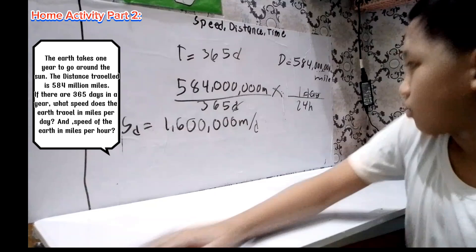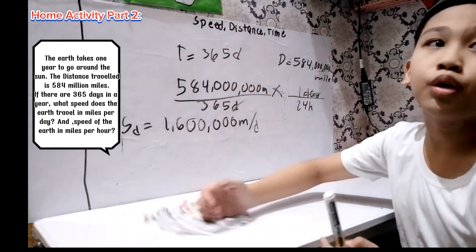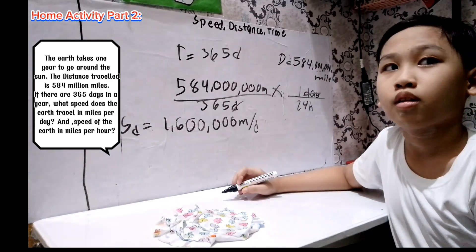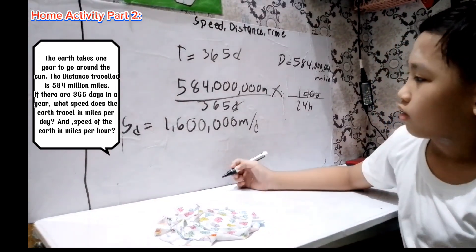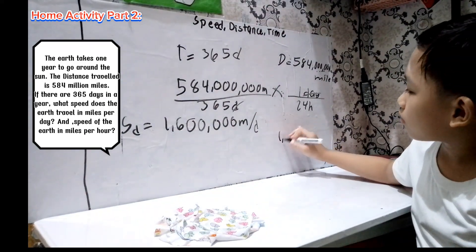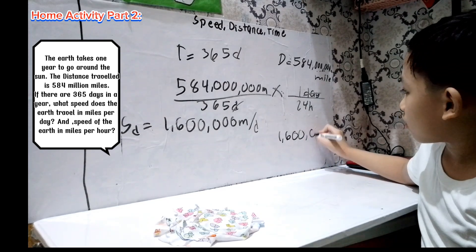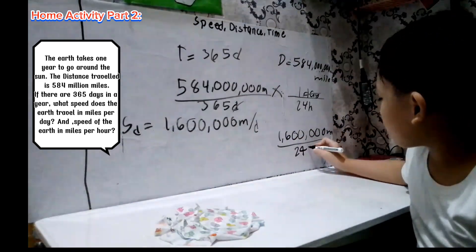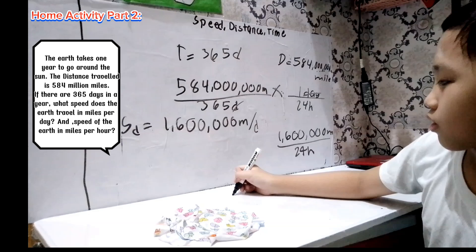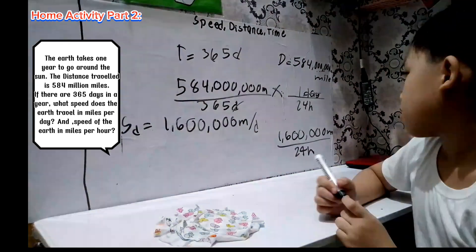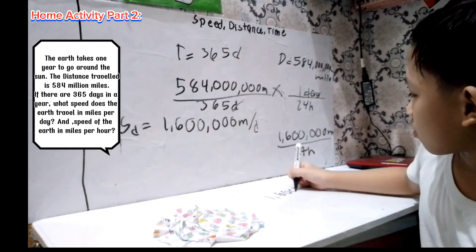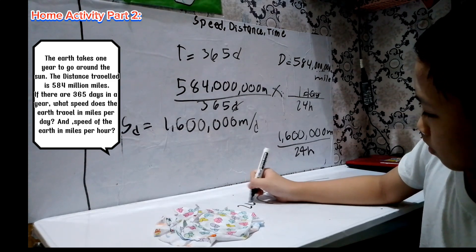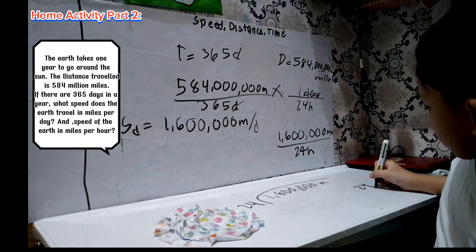For the second question, you are asked to compute for the speed per hour. The answer for the second question will depend on your first answer. For this problem, pay attention to the conversion, especially for time, and take note of the unit. If you are asked to find per hour, look for the hours. You are asked for miles per hour, so divide by 24.